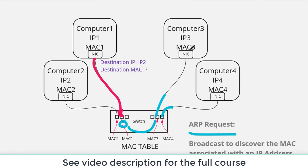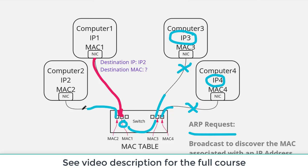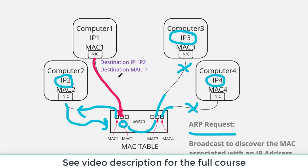Computer three receives the ARP request and sees that somebody is looking for the owner of IP address two — that's not it. Same thing with computer four — it does not own IP two. But the request is also repeated out to another port, and that computer says: somebody's looking for IP address two, that's me — let me send an ARP response to the requester.